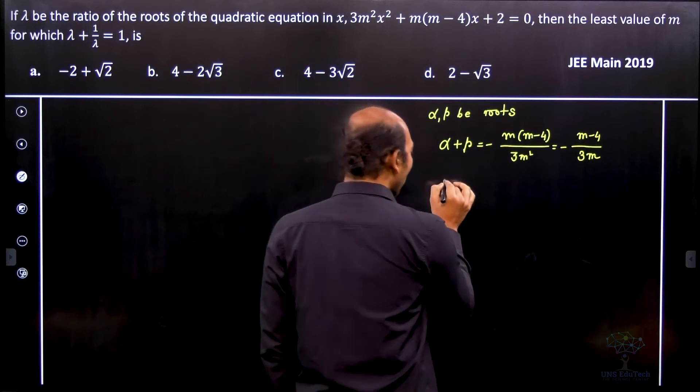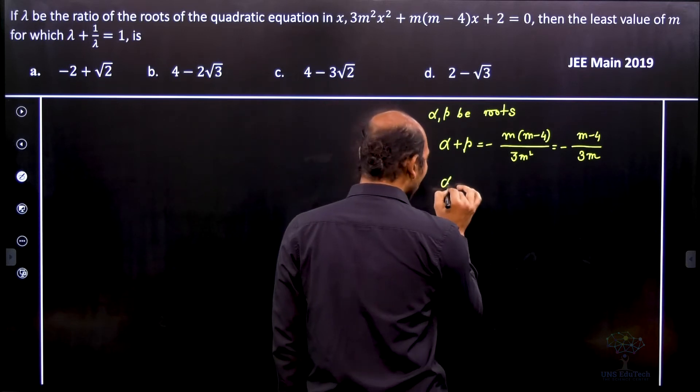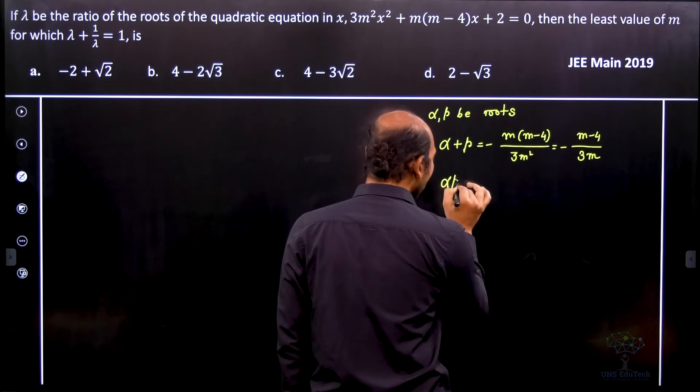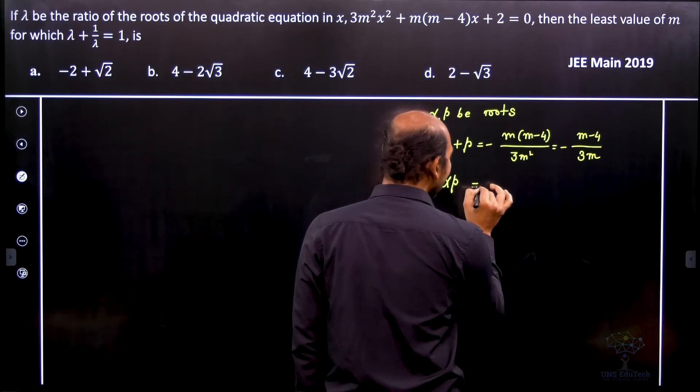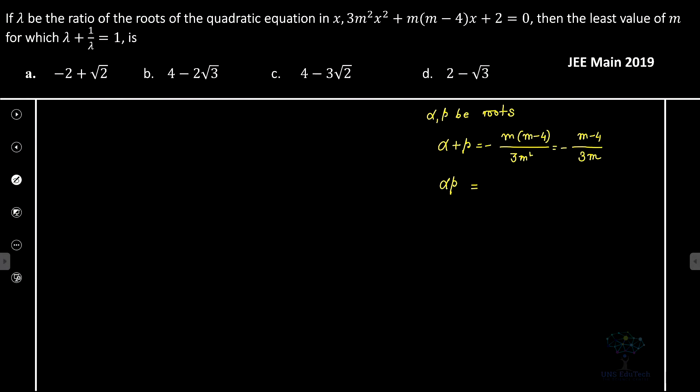Now let's consider the product of the roots. The product alpha·beta is equal to c by a. So therefore it is 2 by 3m².